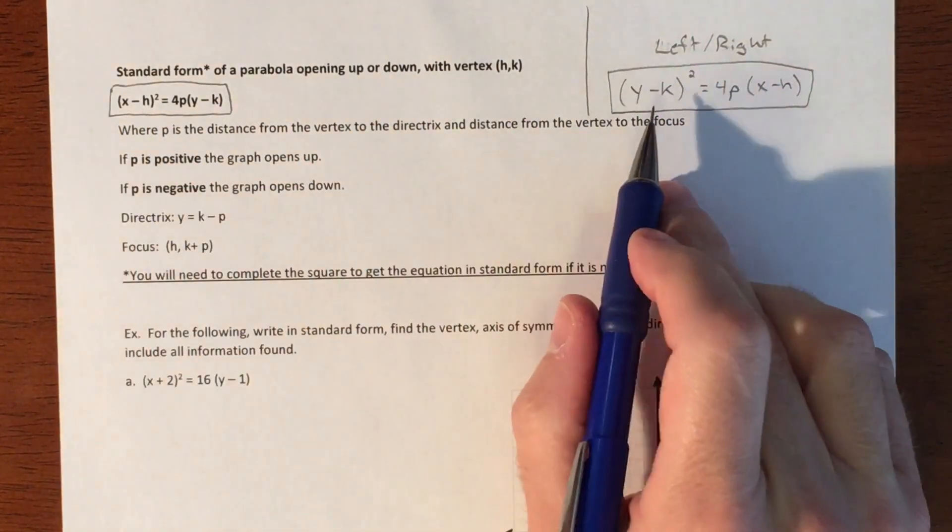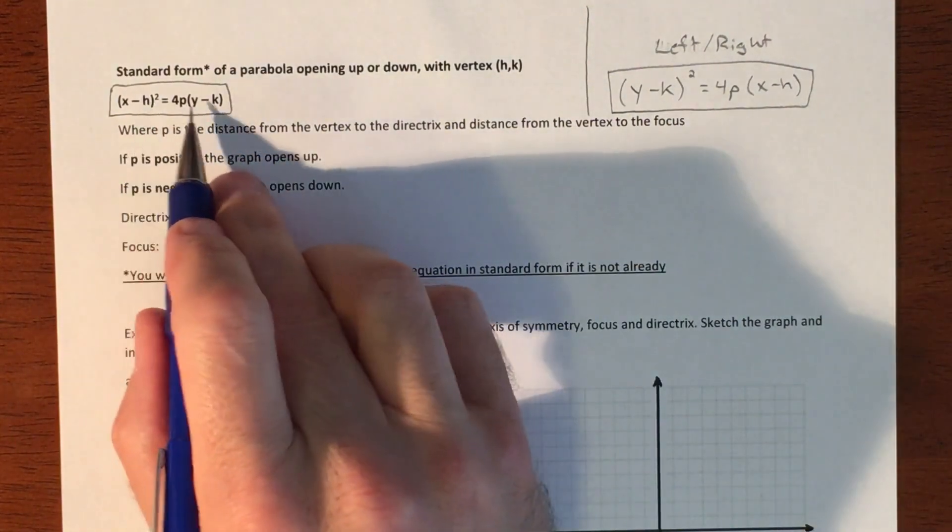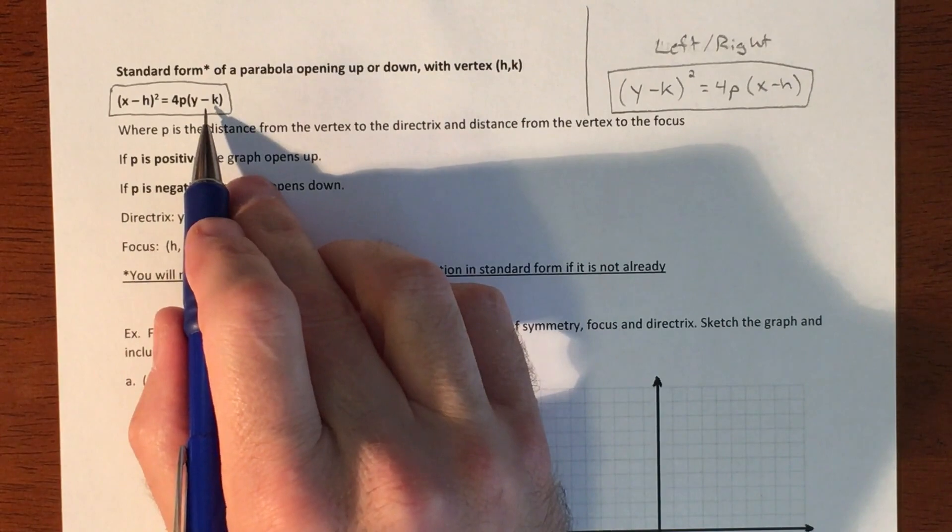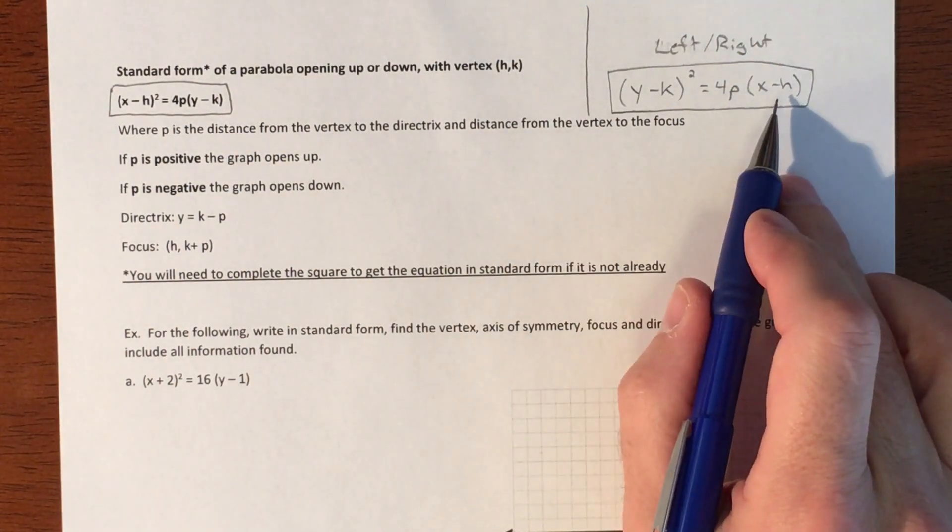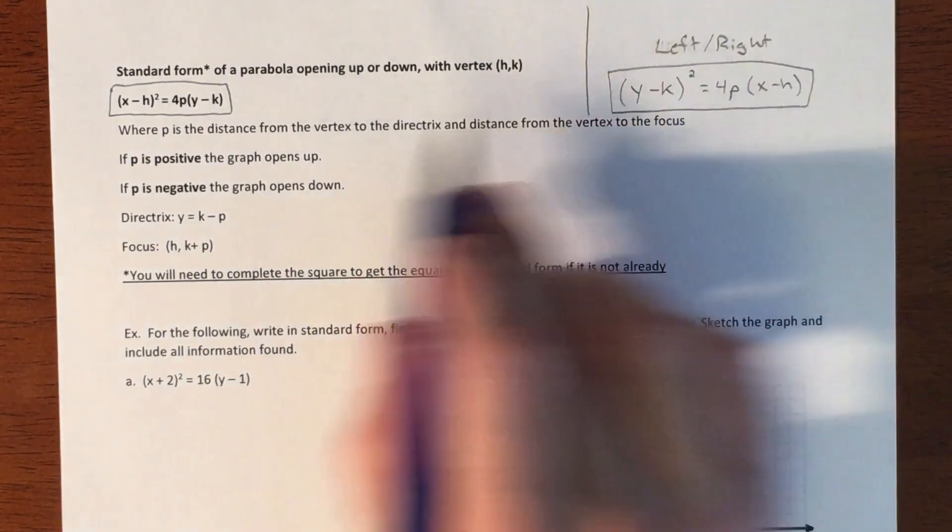Just like before, if the x is being squared it's up and down. If you're squaring the y it's going to be left and right. Your h and k are going to be where your vertex is. This is your left and right shift, this is your up and down shift. Whatever's on the y affects the y's, whatever's on the x affects the x's.